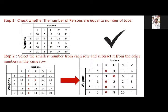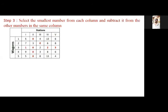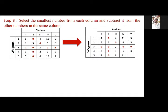Now the next step: the same operation is performed column-wise. In the first column, the minimum number is 1; second column minimum is 0; third column minimum is 0; fourth column is 2 and fifth column is 3. I will subtract these numbers from all the numbers in the respective columns. After doing this, I will get the matrix like this.